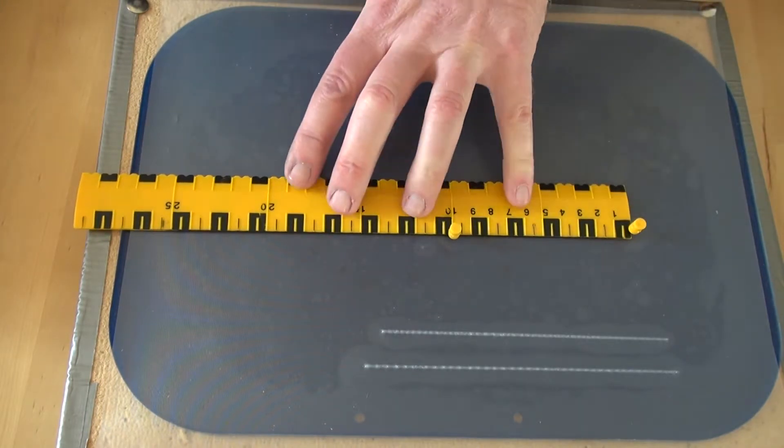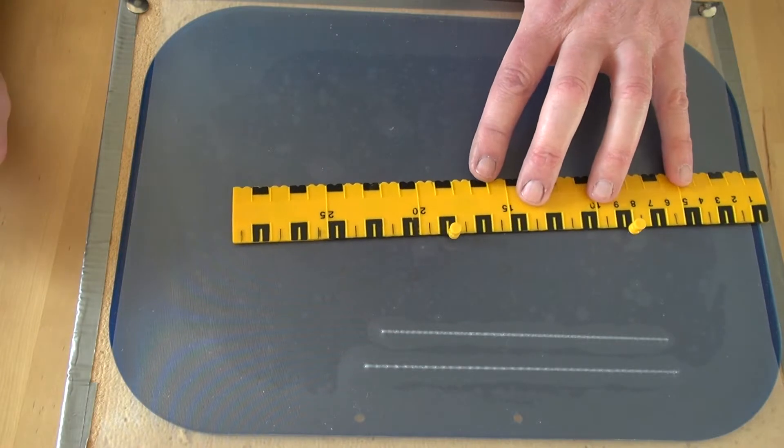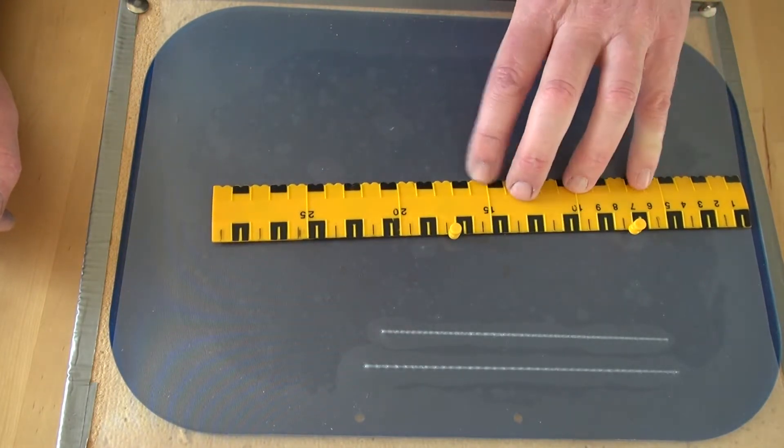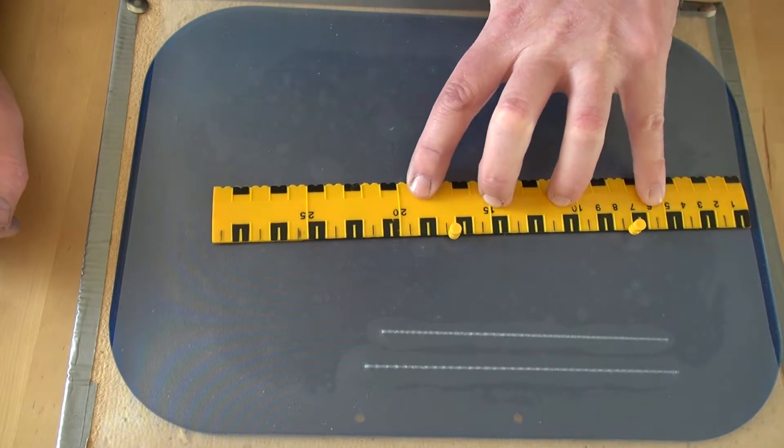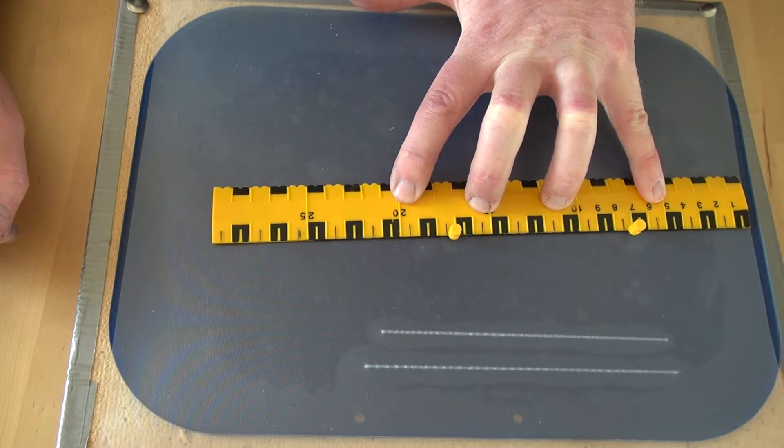Once you've done that, you can then move the ruler away and push it up firmly against those two pins. And then your left hand, if you're right-handed that is, its only function is to hold that ruler in place.